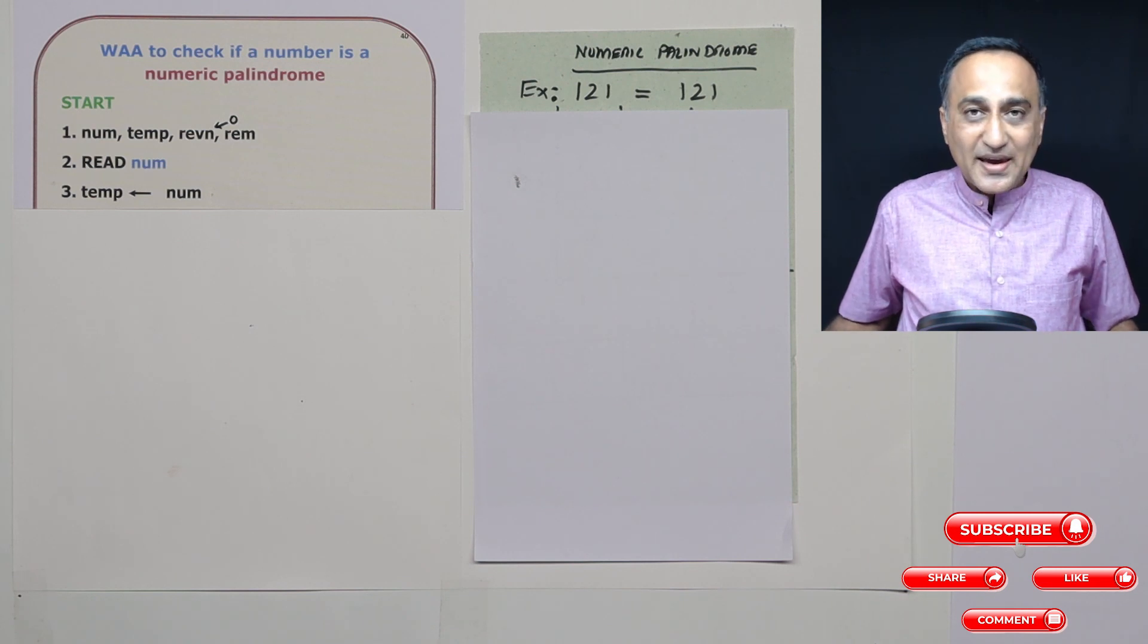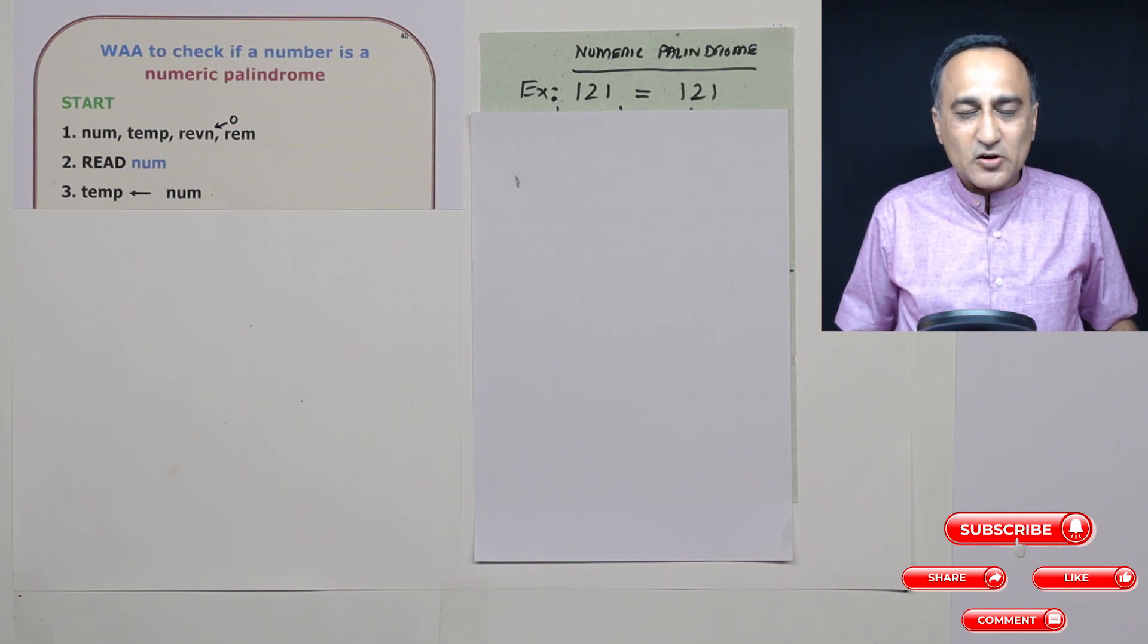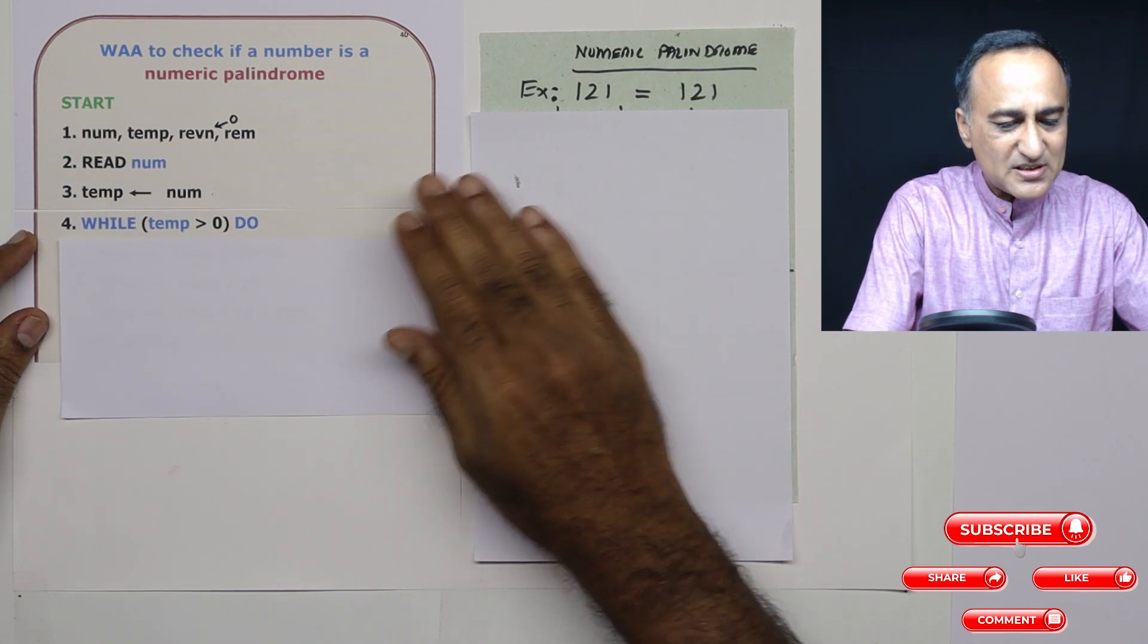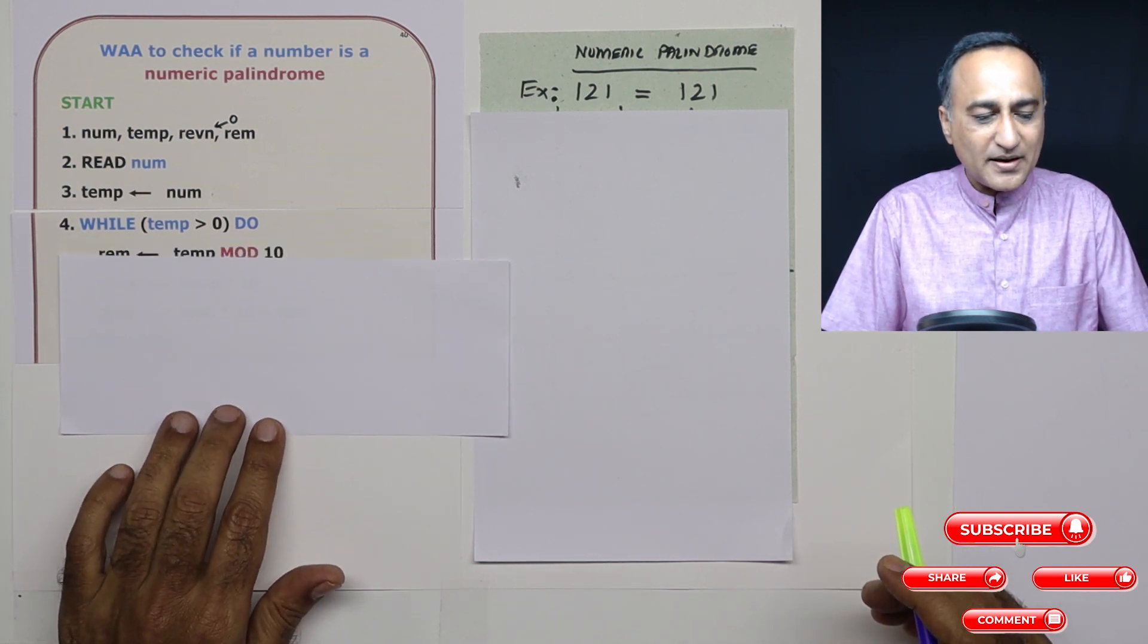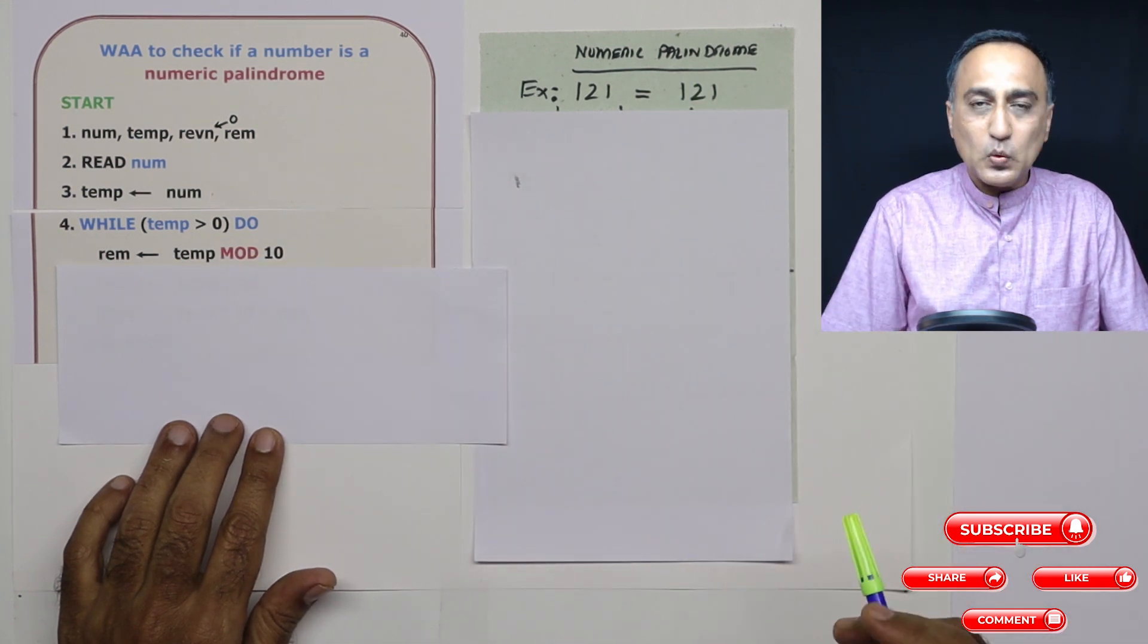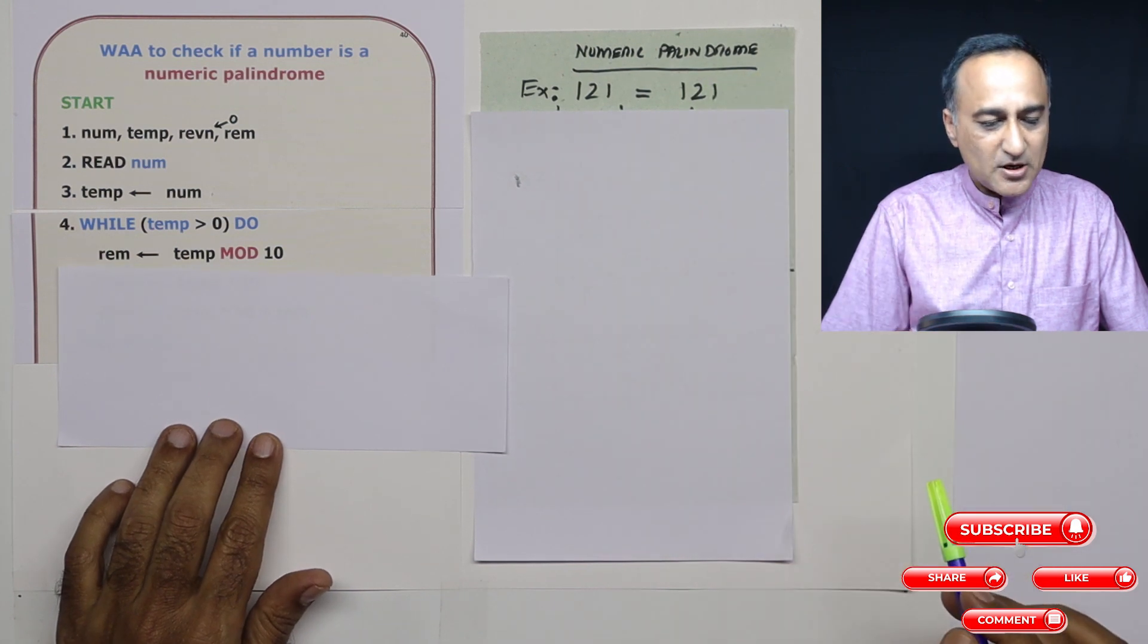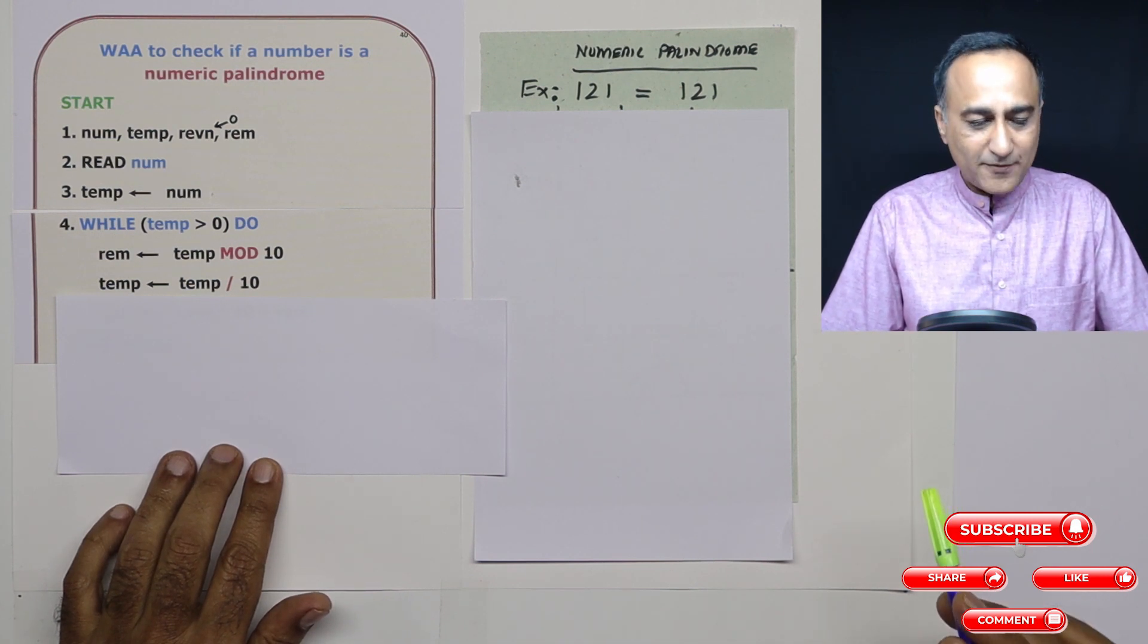So how long should I keep extracting the individual digits of a number? As long as temp is greater than zero. Where did I get this logic? If you remember the previous problem, when we were printing digits from right to left, we kept extracting digits till that number became zero. So here I'm saying, as long as temp is greater than zero, I'm going to do a certain step. First, I'm going to get the remainder. So remainder is temp mod 10. If it's 121 mod 10, remainder is going to be 1. Now I need to get rid of the 1 in the rightmost position. So temp is temp divided by 10. 121 divided by 10, the quotient is 12, so temp is now 12.